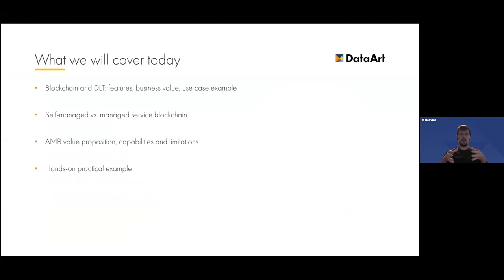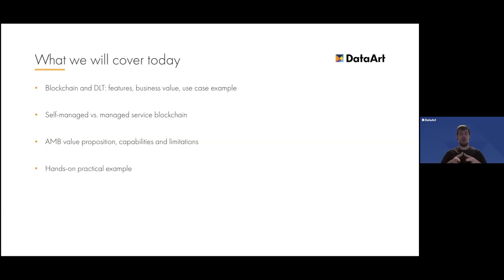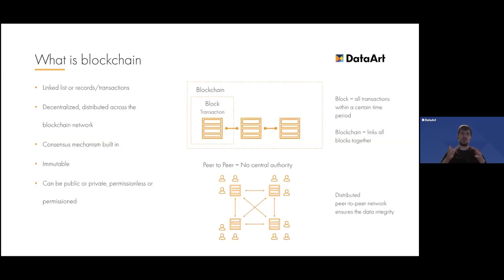Here's what we will cover today: a quick overview of blockchain and distributed ledger technology basics, then deployment options for blockchain services, then a deep dive into AMB itself, and finally a hands-on practical example — a deployment and development of chaincode on an AMB network. Very quickly: blockchain is a linked list of records combined into blocks, secured cryptographically, immutable and distributed across a decentralized network.